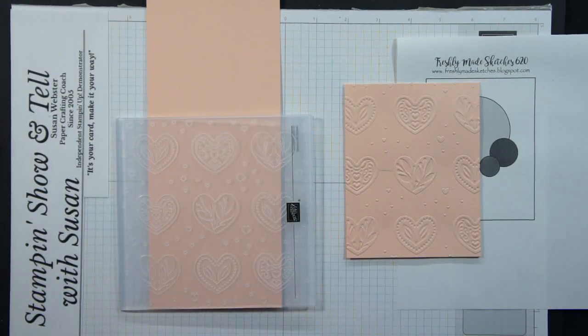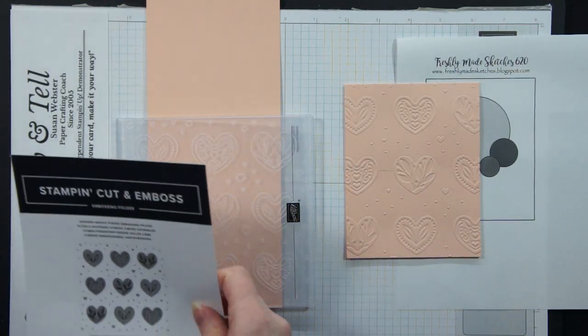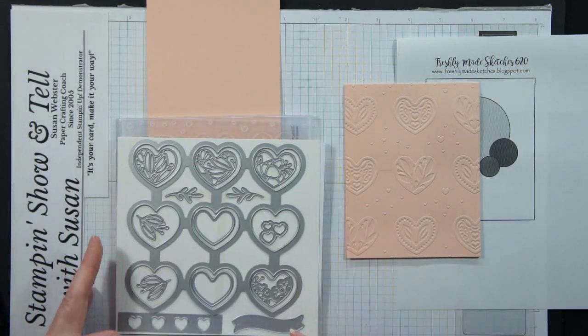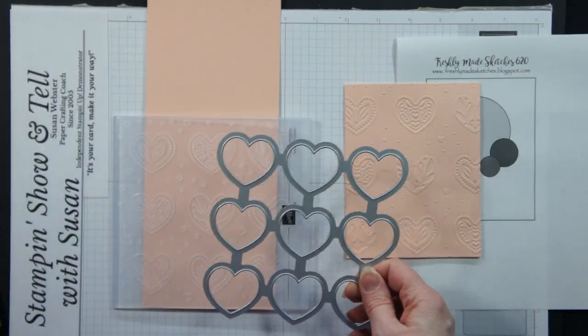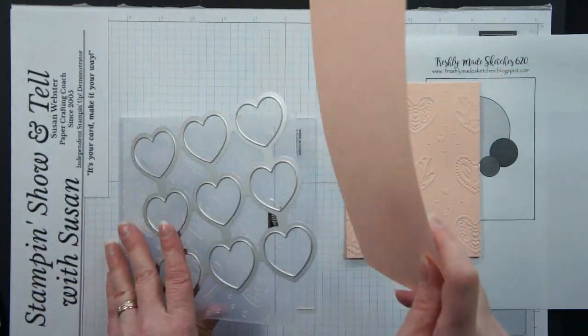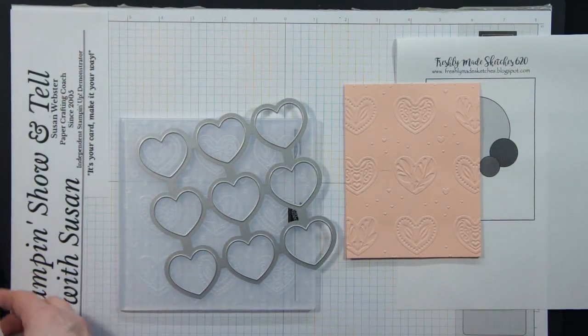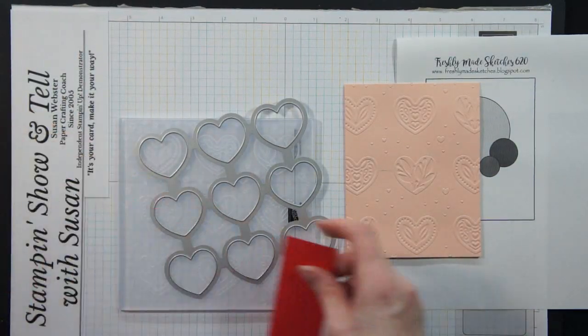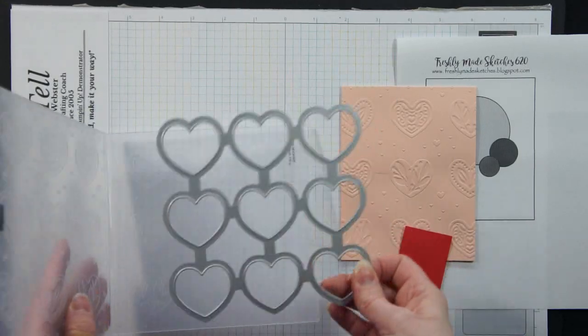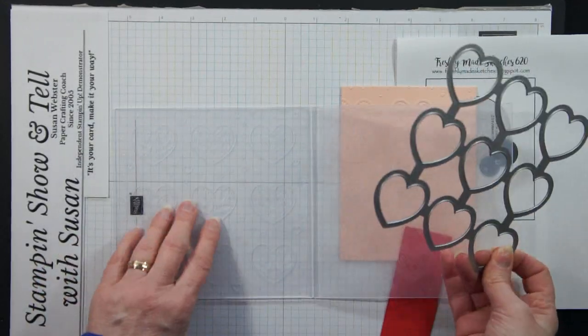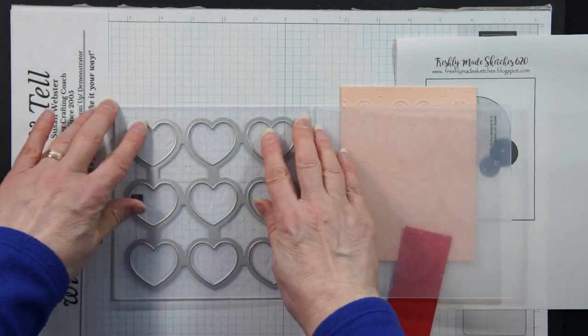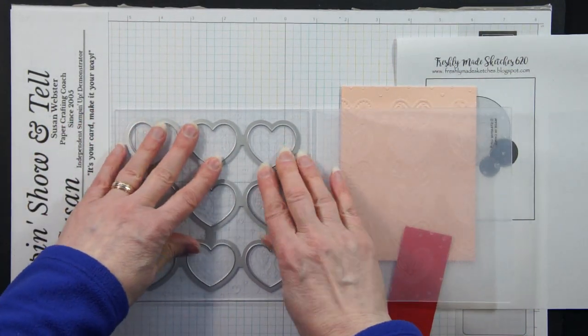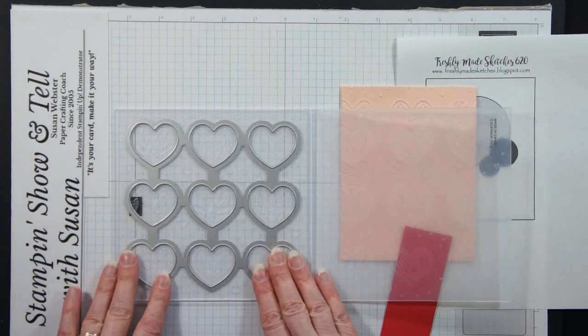Now why do they call it a hybrid folder? Because it also comes with dies that coordinate with the folder and it's hybrid because you can run them together. So that's kind of a cool feature of these hybrid folders is that the dies coordinate perfectly with the folder. So what I do is I usually open my folder up. I put my die so it fits around the images that it coordinates with. That's how that goes there.